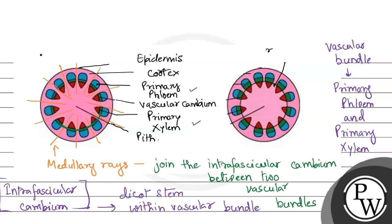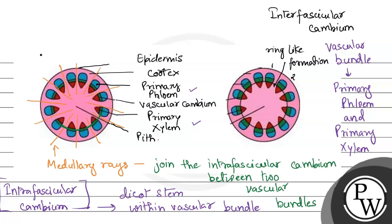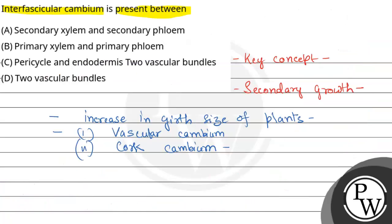This ring-like formation between two vascular bundles — this is one vascular bundle and this is the second vascular bundle, and the ring formed between them — this ring is called interfascicular cambium. So interfascicular cambium is found between one vascular bundle and the second vascular bundle, meaning between two vascular bundles. The correct answer is Option D: between two vascular bundles. Hope you understood it well. Best of luck.